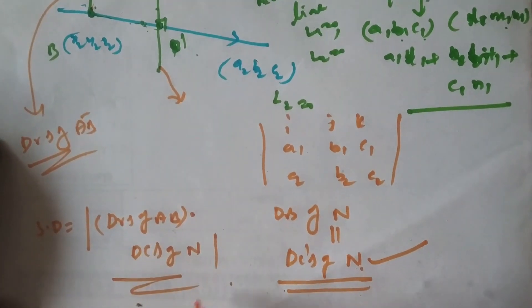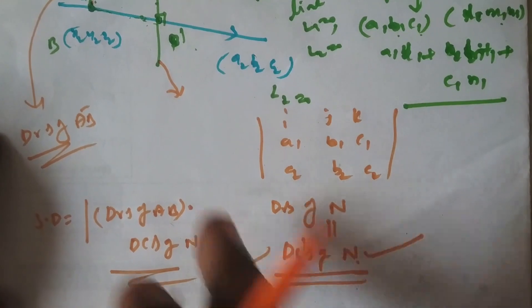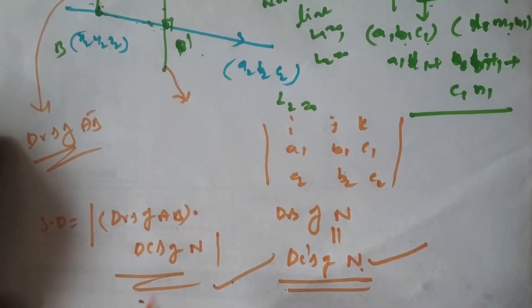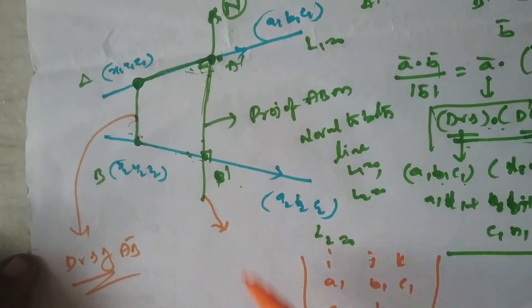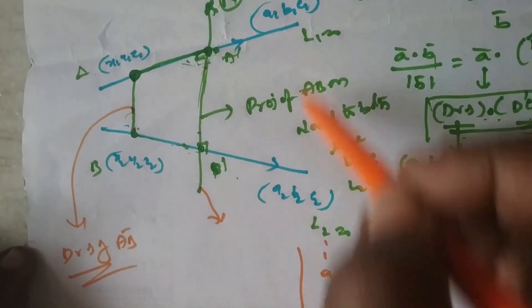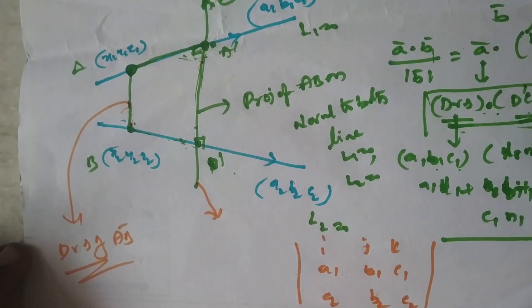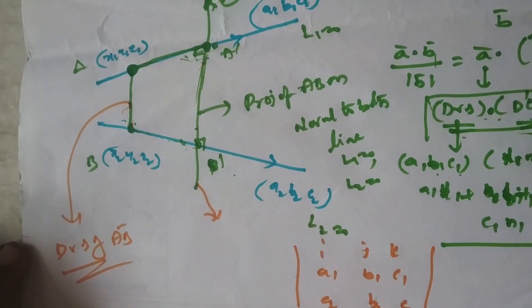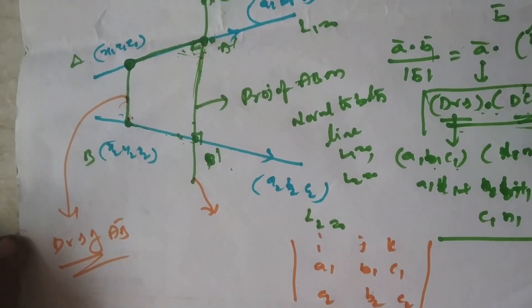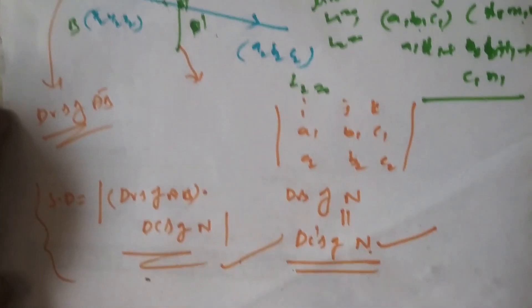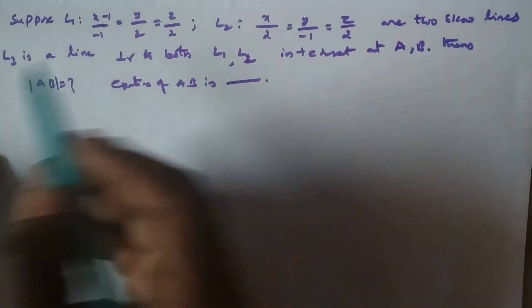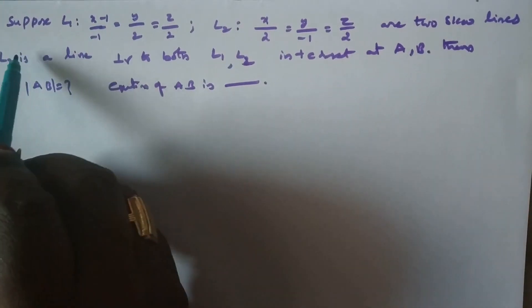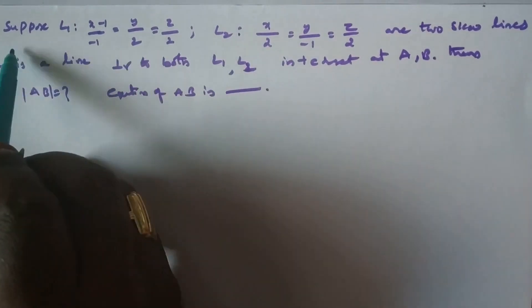From this concept you can easily find the shortest distance between the two lines L1 = 0 and L2 = 0. It is very easy to remember. Now with the help of the above concept let us do a specific example.